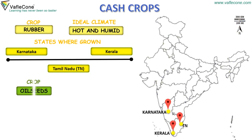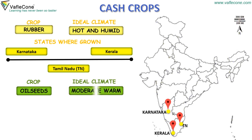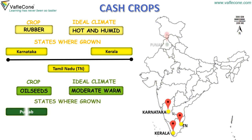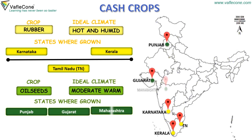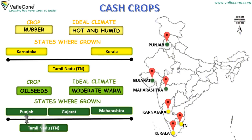Oil seeds: ideal climate is moderate and warm. States where oil seeds are grown are Punjab, Gujarat, Maharashtra, Tamil Nadu and Andhra Pradesh.